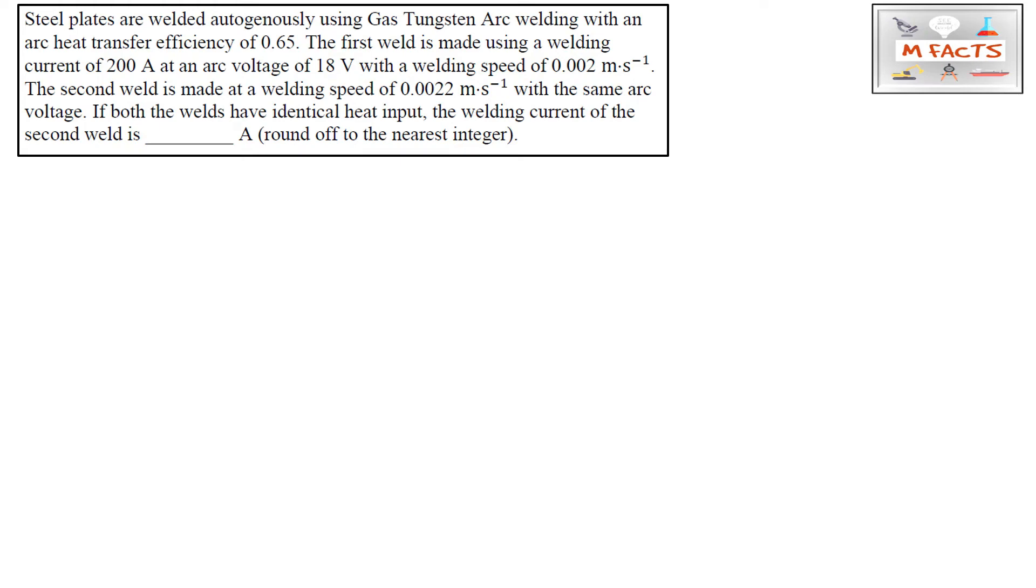Hello and welcome to our YouTube channel Metallurgical Facts. This question is from GATE 2022. I already explained the concept behind welding questions in a previous video—I'll put it in the description or I-button. The question is: steel plates are welded autogenously using Gas Tungsten Arc welding with an arc heat efficiency of 0.65. First, we'll write down the given data. The heat transfer efficiency η is 0.65.